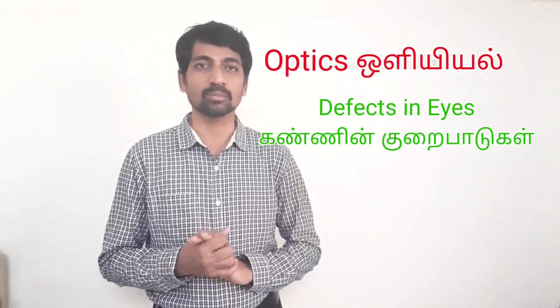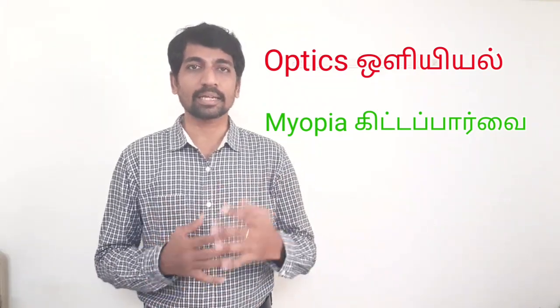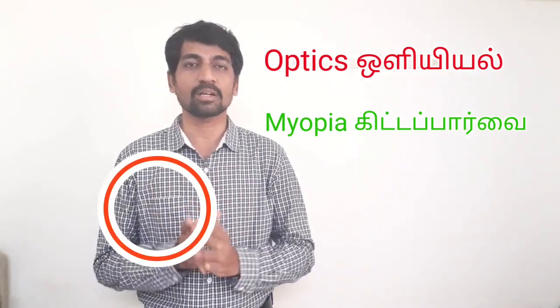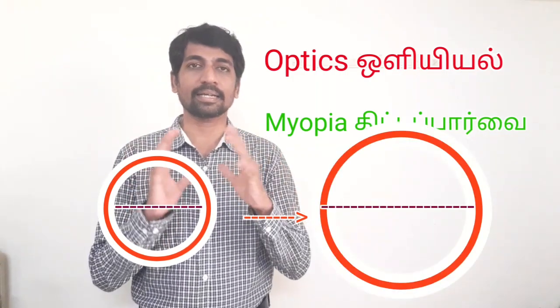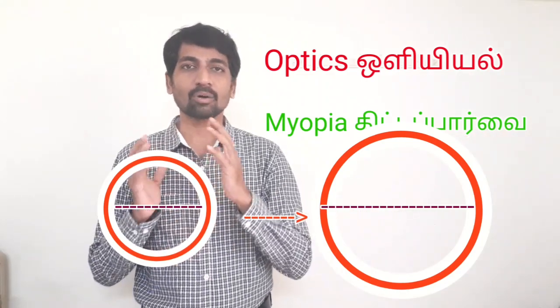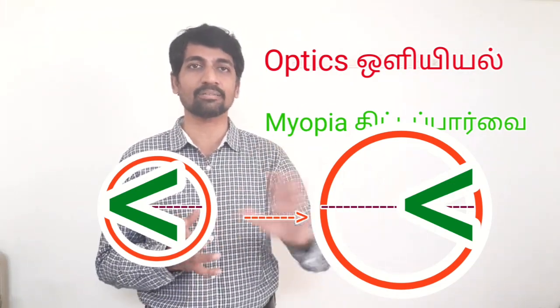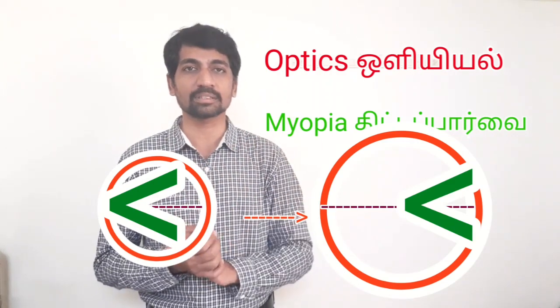The first defect is myopia, also called short-sightedness. In myopia, nearer objects are clear but distant objects are not. This happens because the focal length of the eye lens is reduced, or the gap between the eye lens and the retina increases. Light from a distant object converges before the retina. This defect is corrected using a concave lens.